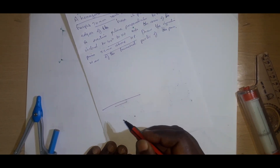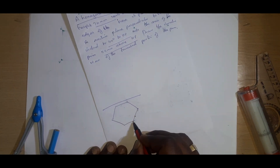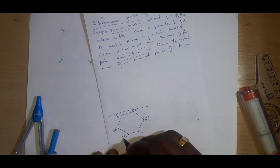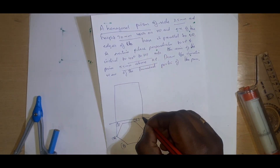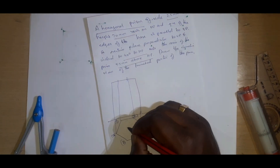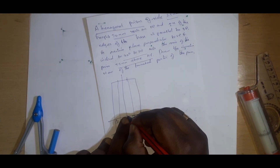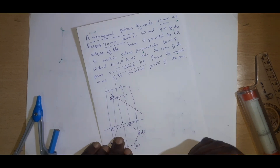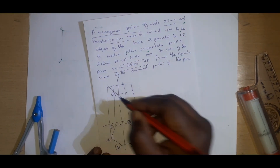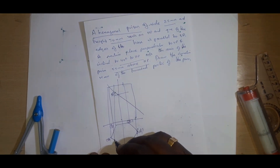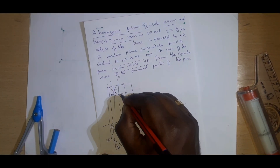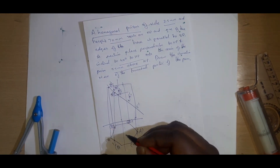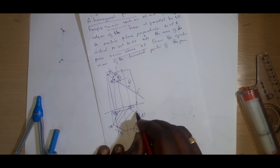First we can draw the normal diagram. Since one of the base edges is parallel to VP and it has 6 sides, we can draw the hexagon like this. We can give the name at the base: A, B, C, D, E, F — everything in brackets because it is at the bottom, since the top portion we are going to remove. For the 70mm axis height, the total height is 70mm and I am going to take 55mm where it cuts at 40 degrees. Now I name the intersection points. This is 1, 1 dash, 2 dash, 3 dash, 4 dash, 5 dash, 6 dash, 7 dash, 8 dash, and 9 dash. So these are the points, and we can hash this.